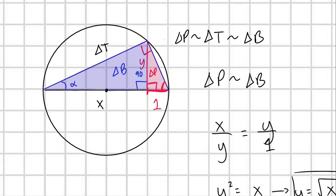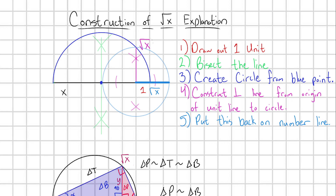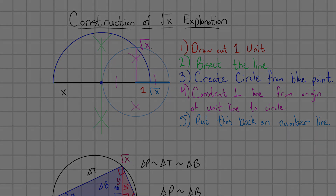We have definitively concluded that the length of this leg here is equal to the square root of x. So hopefully this construction now makes sense and you can see why the square root of x pops out of it. If you enjoyed this video, let me know in the comments and consider subscribing to the channel. Thank you so much for watching.